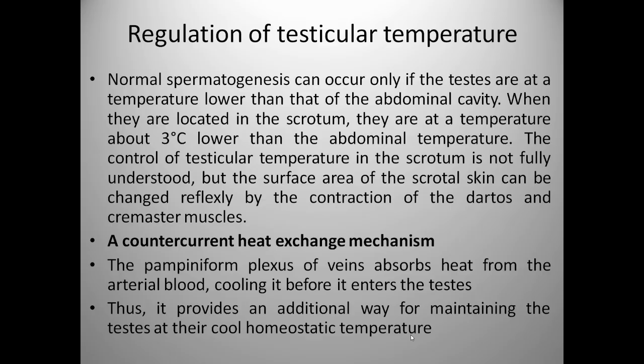Now we will see how they regulate testicular temperature. Normal spermatogenesis can occur only if the testes are at a temperature lower than that of the abdominal cavity. When located in the scrotum, they are at a temperature about 3 degrees centigrade lower than the abdominal temperature. The control of testicular temperature is not fully understood, but the surface area of the scrotal skin can be changed reflexively by the contraction of the dartos and cremaster muscles. Counter-current heat exchange mechanism: the pampiniform plexus of veins absorbs heat from the arterial blood, cooling it before it enters the testis, thus providing an additional way for maintaining the testes at their cool homeostatic temperature.